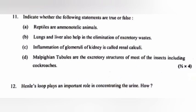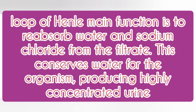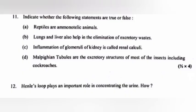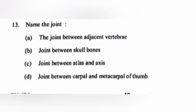Question 12. Henle's loop plays an important role in concentrating the urine. How? Answer: The loop of Henle's main function is to reabsorb water and sodium chloride from the filtrate. This conserves water for the organism, producing highly concentrated urine.